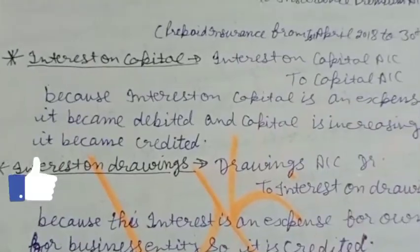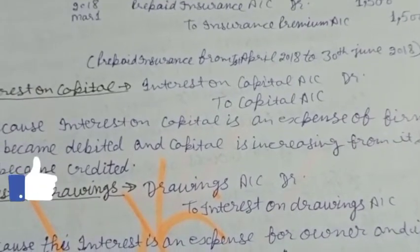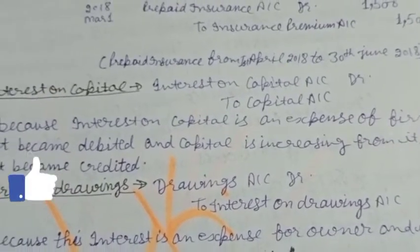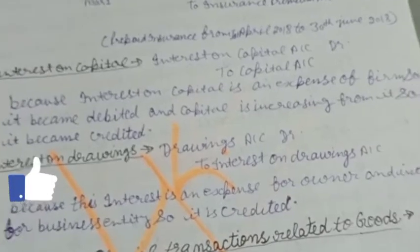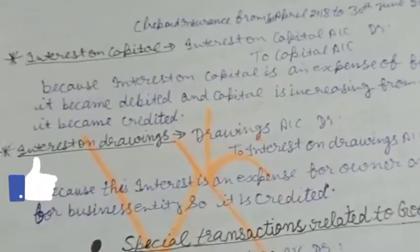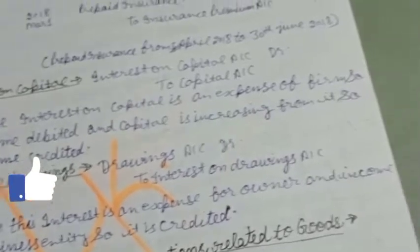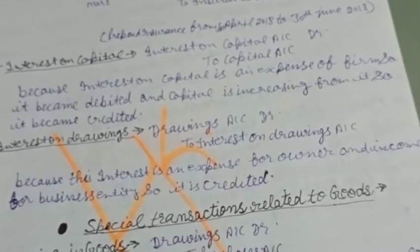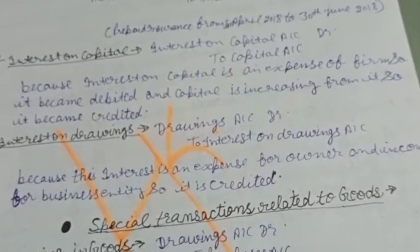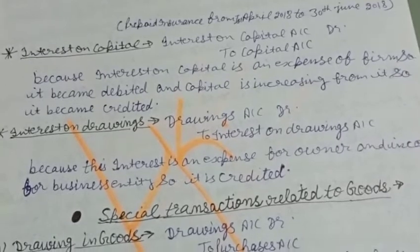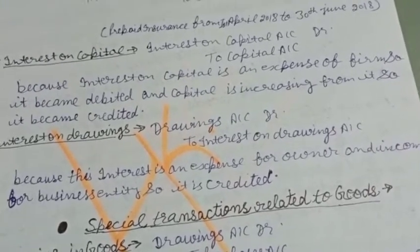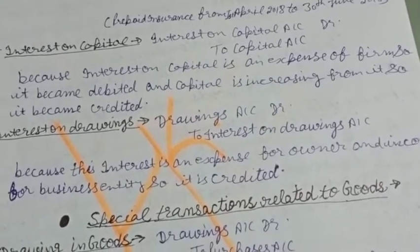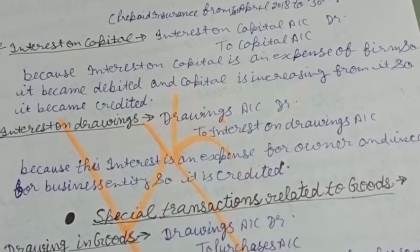Now we talk about interest on capital. The entry is: Interest on Capital Account debit to Capital Account. This is because interest on capital is an expense of the firm — so it is debited. Capital increases from it, so it is credited.